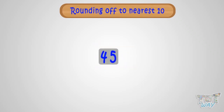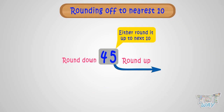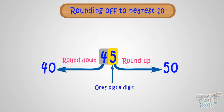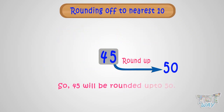Let's round off 45 to the nearest ten. The tens digit here is four and there are two options — either round up to the next ten, that is 50, or round down to the previous ten, that is 40. It depends upon the digit next to four, that is the ones digit. If the ones digit is five or more, we round it up; if it is less than five, we round it down. Here the ones digit is five, so we round it up. So 45 will be rounded up to the next ten, that is 50.